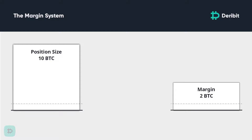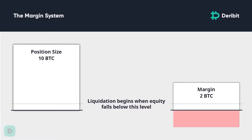If a trader runs out of margin, they will be liquidated. Their side of the position will be unloaded to another trader who does have the required margin to take on the position from that point. But what happens when there is a deficit between where the losing trader was liquidated and where another trader was willing to take that position on?